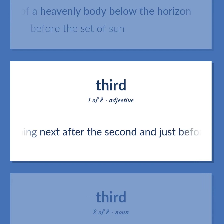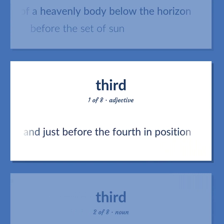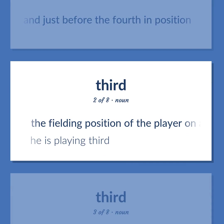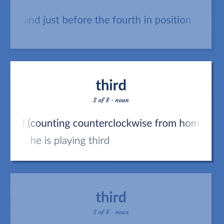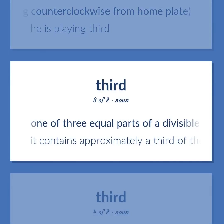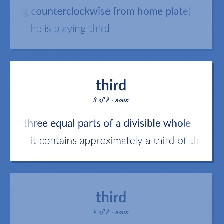Third: coming next after the second and just before the fourth in position. The fielding position of the player on a baseball team stationed near the third base in the infield, counting counterclockwise from home plate. He is playing third. One of three equal parts of a divisible whole. It contains approximately a third of the minimum daily requirement.